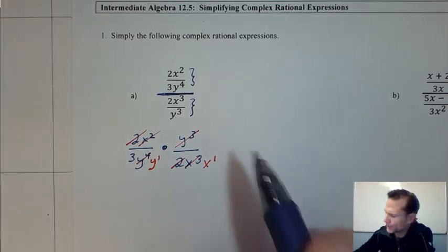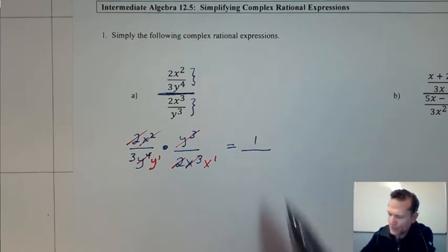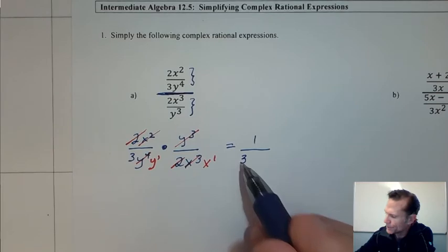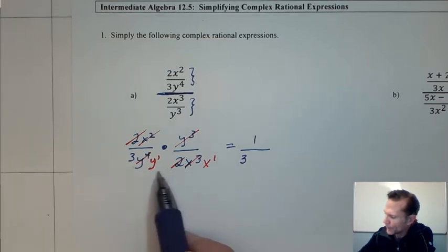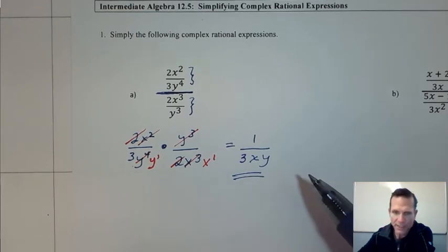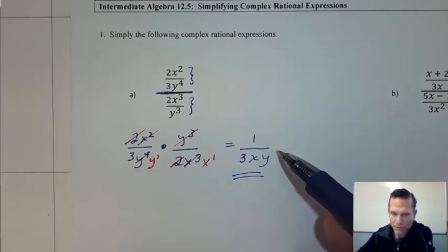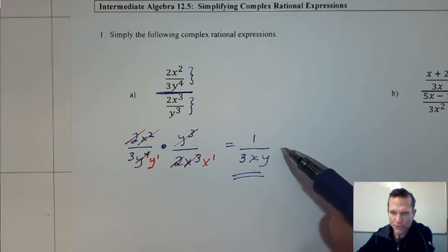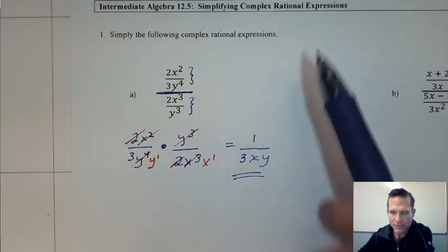What we have left in this problem then, in the numerator everything canceled out so we have a one left, and then in the denominator we have a three and an xy. I like to write it in alphabetical order. What we see now is we're down to a rational expression where we don't have other fractions inside of the fraction, so we've simplified this complex rational expression.